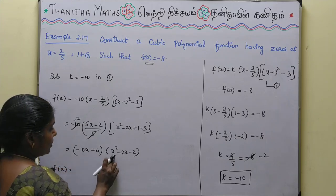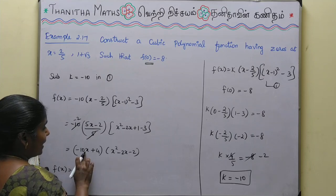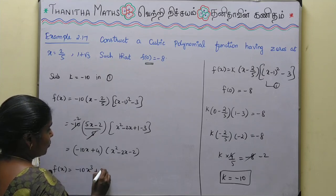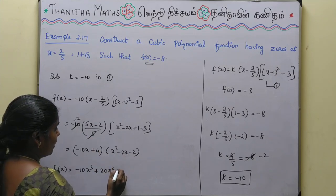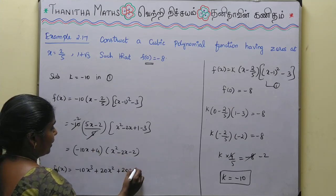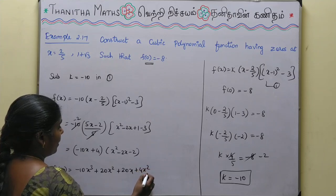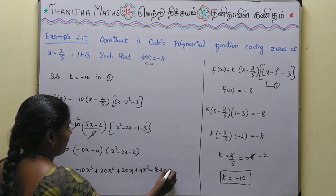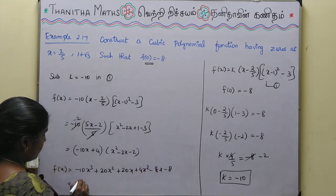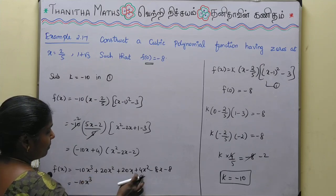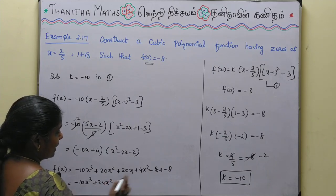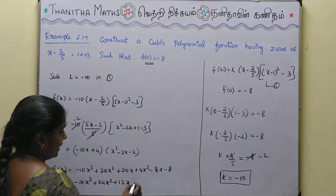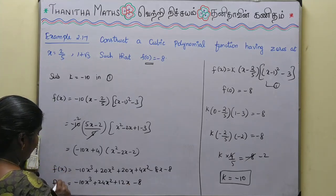Expanding: -10x · x² = -10x³; -10x · (-2x) = +20x²; then multiplying -4 gives +4x² - 8x - 8. Combining: 20 + 4 = 24x², 20 - 8 = +12x, constant -8. So f(x) = -10x³ + 24x² + 12x - 8.